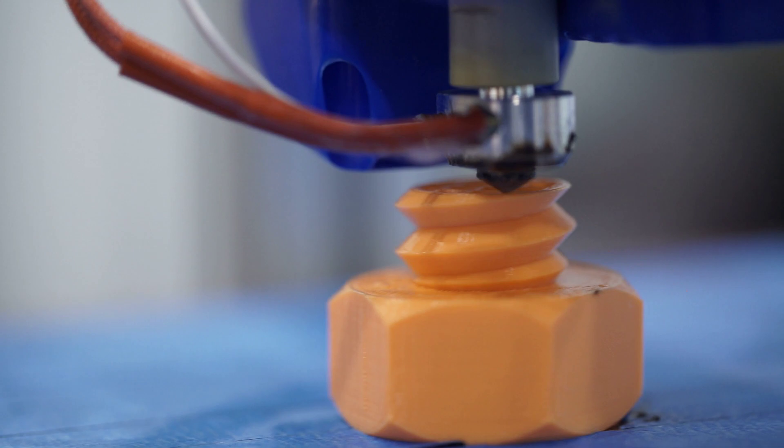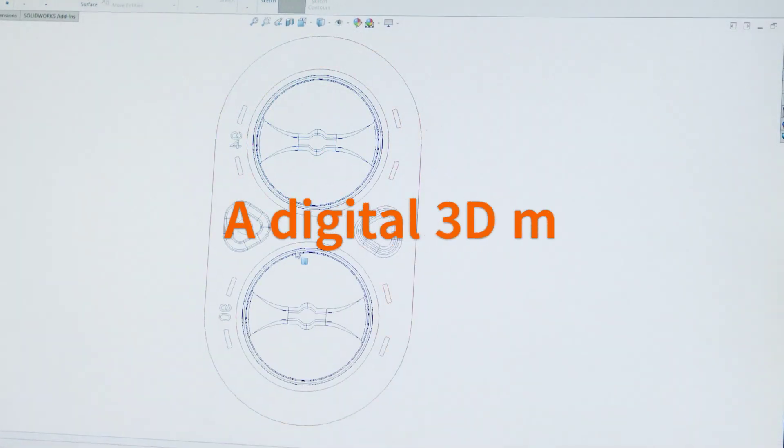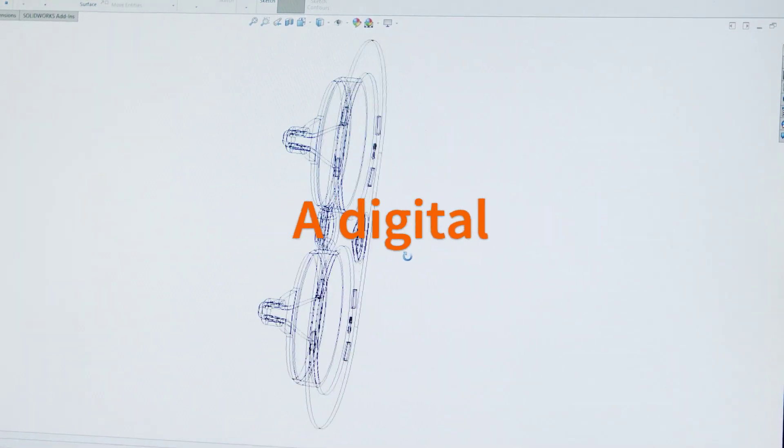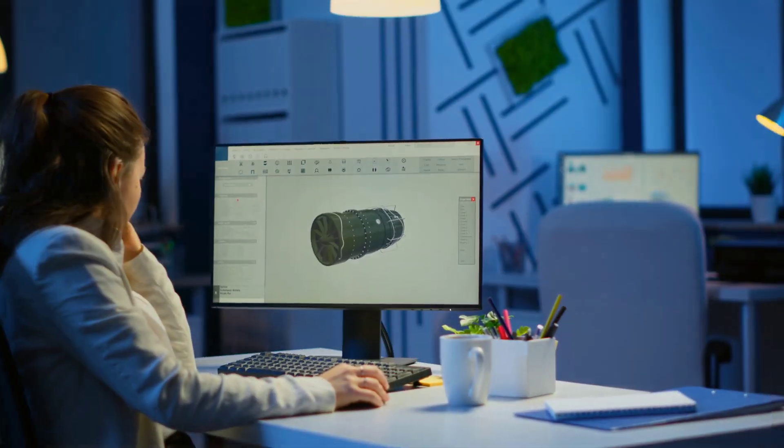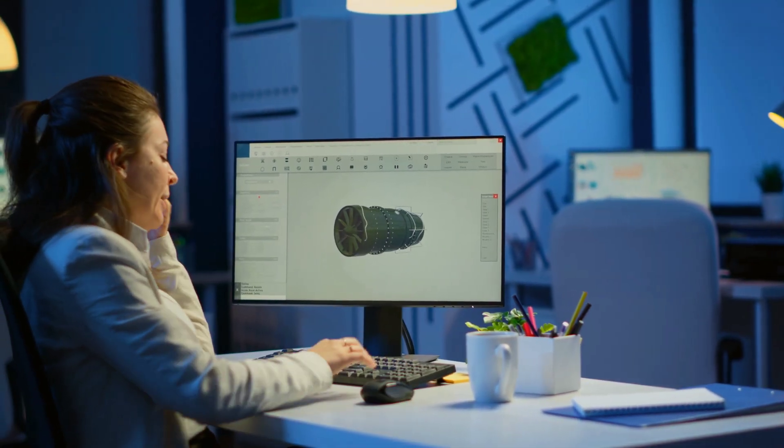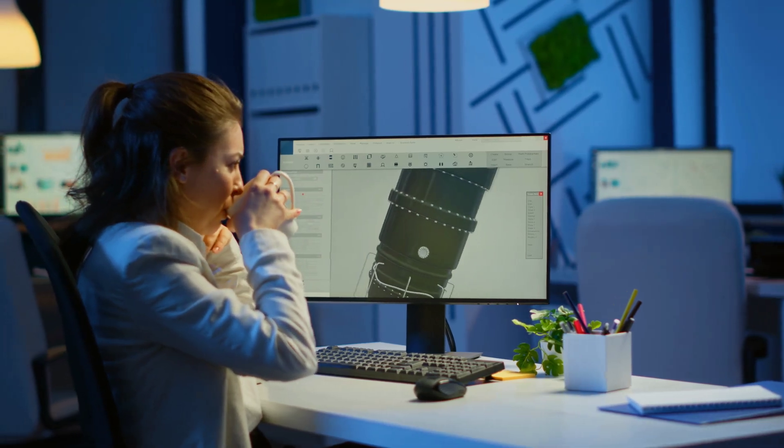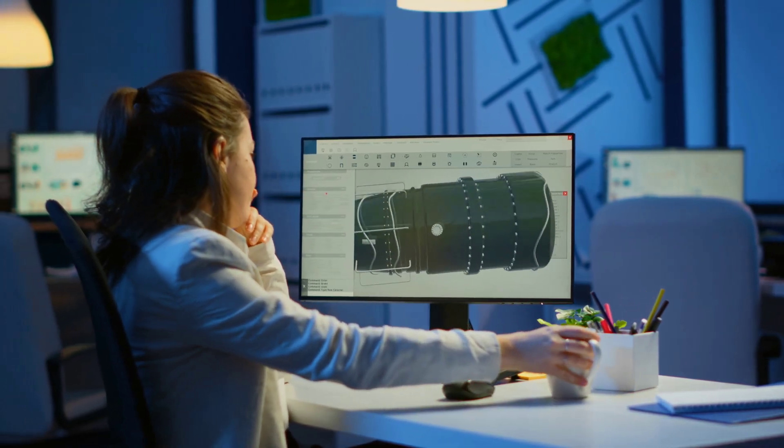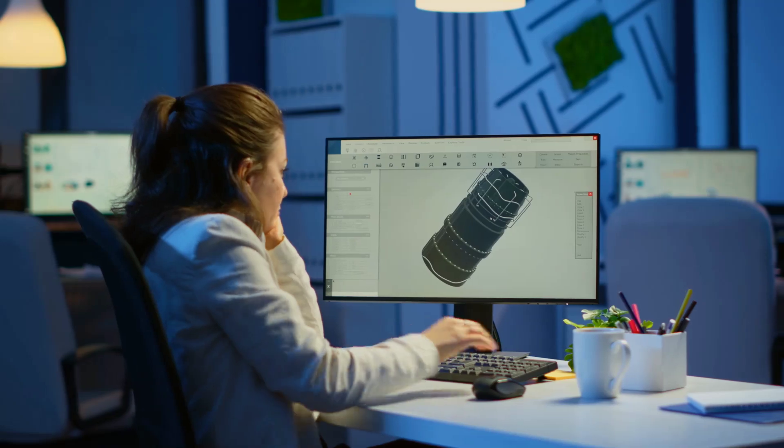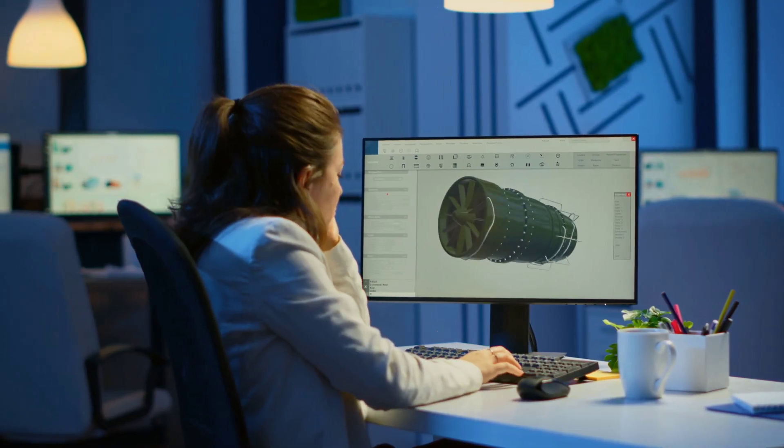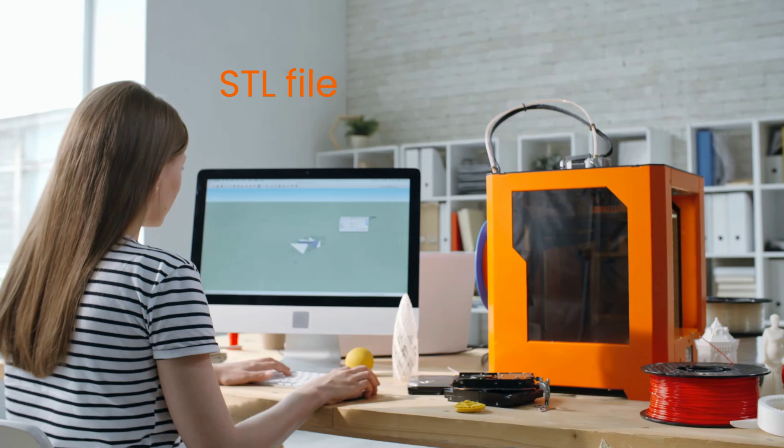But before you can print, you need a blueprint, a digital 3D model of your creation. There are tons of 3D modeling software options, from beginner-friendly to those used by professional designers. Think of it as digital sculpting software, where you can bring your ideas to life on your computer. Once you've designed your masterpiece, you need to convert it into a format the printer understands, like an STL file.